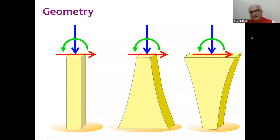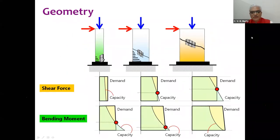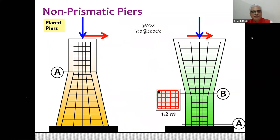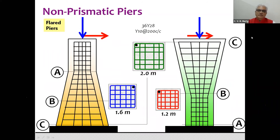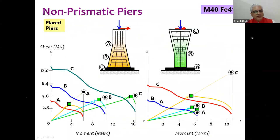That was for prismatic members. Now let's consider flared piers. We look at a cross section varying from 1.2 m (narrowest) to 2.0 m (widest), with an intermediate 1.6 m, keeping reinforcement the same to isolate geometric effects. We analyze flaring-down and flaring-up piers and notice that the behavior is very different in the two cases.